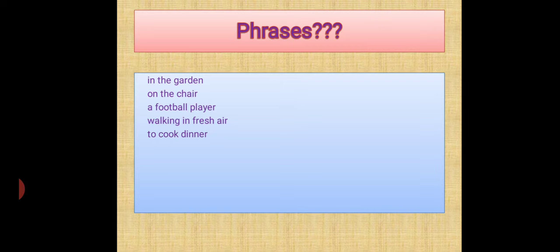It is not giving a complete sense of the sentence. Similarly, 'on the chair' — you might be sitting on the chair, your book might be there on the chair. But 'on the chair' is giving you some sense, but not the full sense. So when a group of words gives some sense but not the complete sense, then it is known as a phrase. It does not have a subject and it does not have a verb.